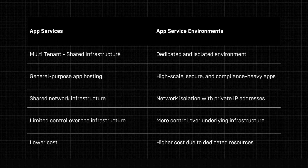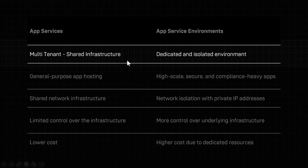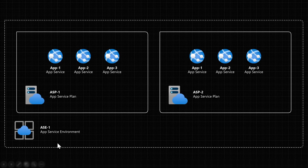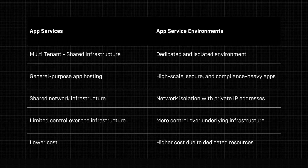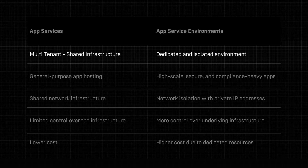Now let's have a look at a side-by-side comparison. Regular App Services are called multi-tenant apps. This is the key difference: they are multi-tenant because the server that hosts these App Service plans also hosts App Service plans from multiple organizations. For example, ASP1 could be yours and ASP2 could be from another random company. But with App Service environments, all the App Service plans and apps within that dedicated environment will be owned only by your organization. All other characteristics revolve around this multi-tenant versus dedicated nature.